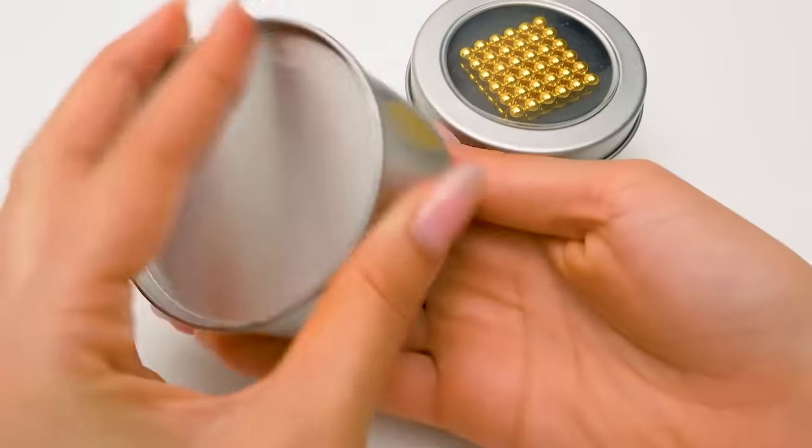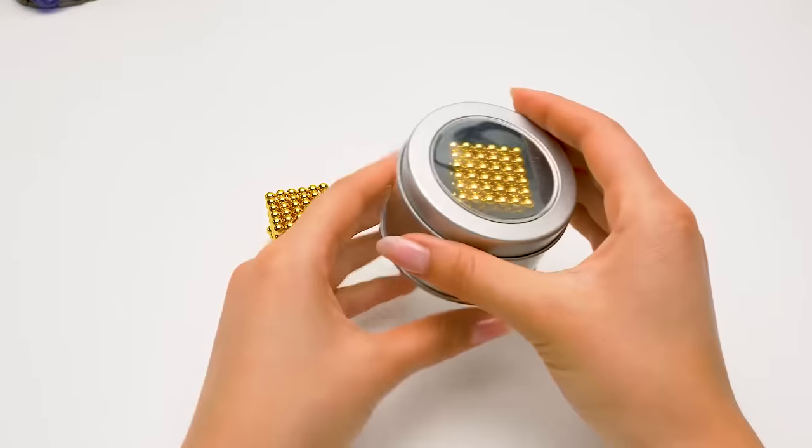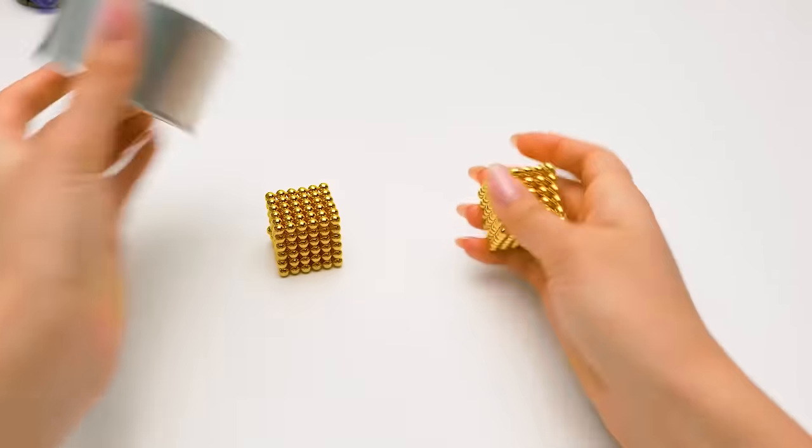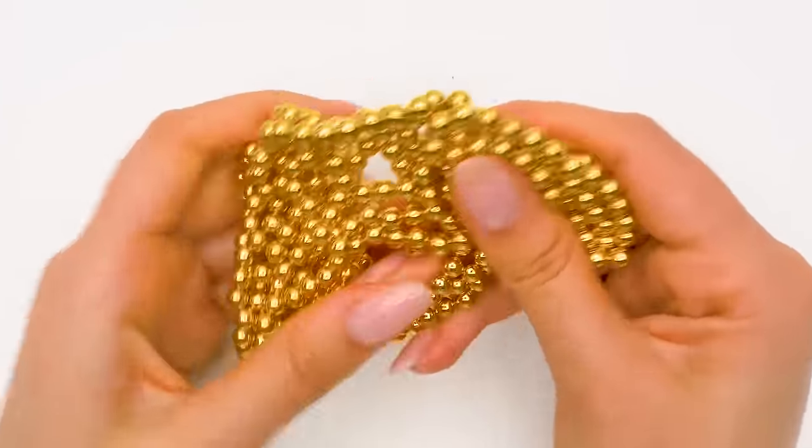They're sold in packages like this. Here they are! Very beautiful magnetic balls of a golden color. Let's open the second jar. They will form the base of our gauntlet. Look! They attach to each other in a funny way!